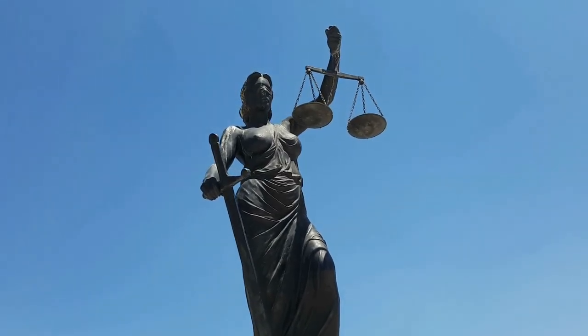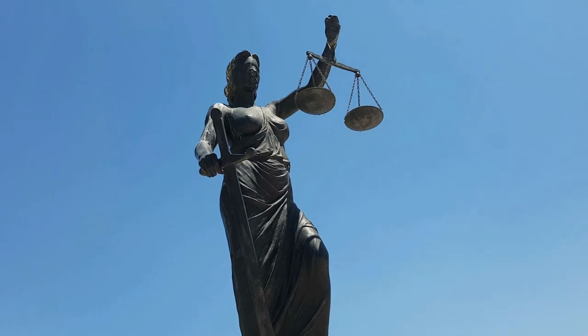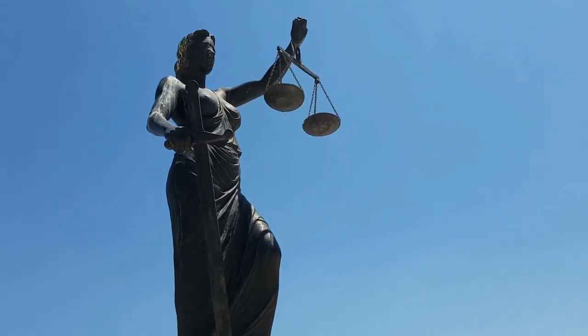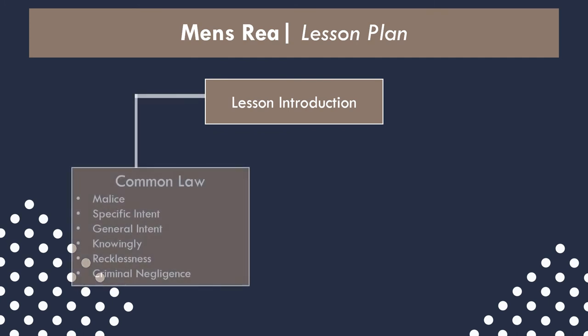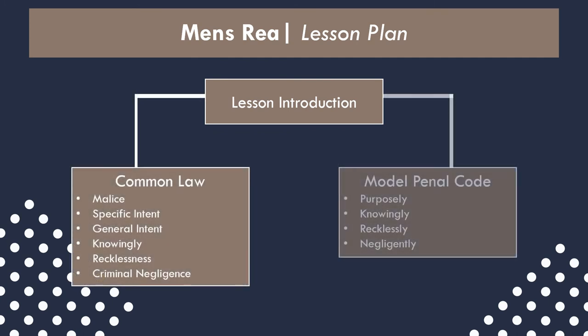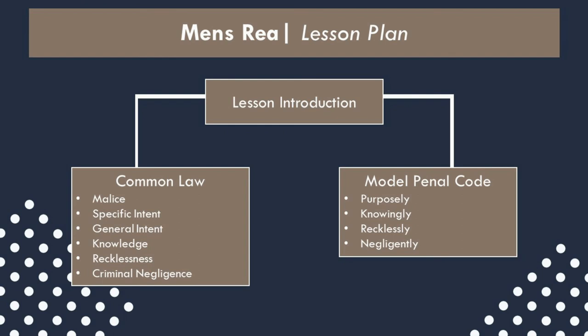Okay, now we've covered mens rea under both the common law and the MPC. This lesson's purpose was to give an in-depth look at the element of mens rea in order to better understand the specifics of the criminal offenses covered in other videos. We dug into the common law's broad spectrum of judge-made categorizations before looking at the MPC's spectrum of four categories — purposefully, knowingly, recklessly, and negligently. Of course, mens rea is only one element of the four basic elements of a crime. I highly encourage you to take a look at the other videos covering actus reus, as well as concurrence and causation.